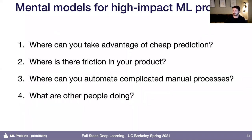There's no silver bullet for finding high-impact machine learning projects — it depends on your use case and is generally hard. But there are a few mental models for thinking about what types of projects might be high impact. The four I want to talk about are: where can you take advantage of cheap prediction? Where can you automate friction in your product? Where can you automate complicated manual processes? And what are other people doing?